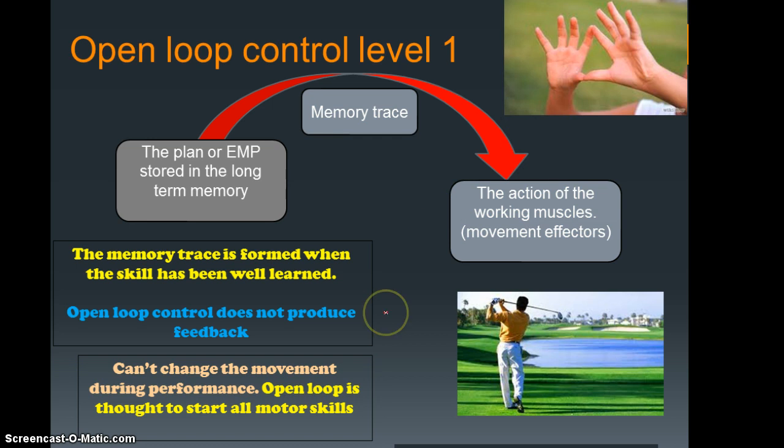The memory trace is formed when the skill has been well learned. Open loop control doesn't actually give us any feedback because it's quick. There's no time for any feedback. Another thing people tend to forget is that you can't actually change the movement during the performance. If we look at a person's golf swing, as soon as they start to strike the ball or start the skill, there's no real opportunity for them to change or adjust through any kinesthesis or feedback. It's a very quick action performed before you get the opportunity to make any changes.